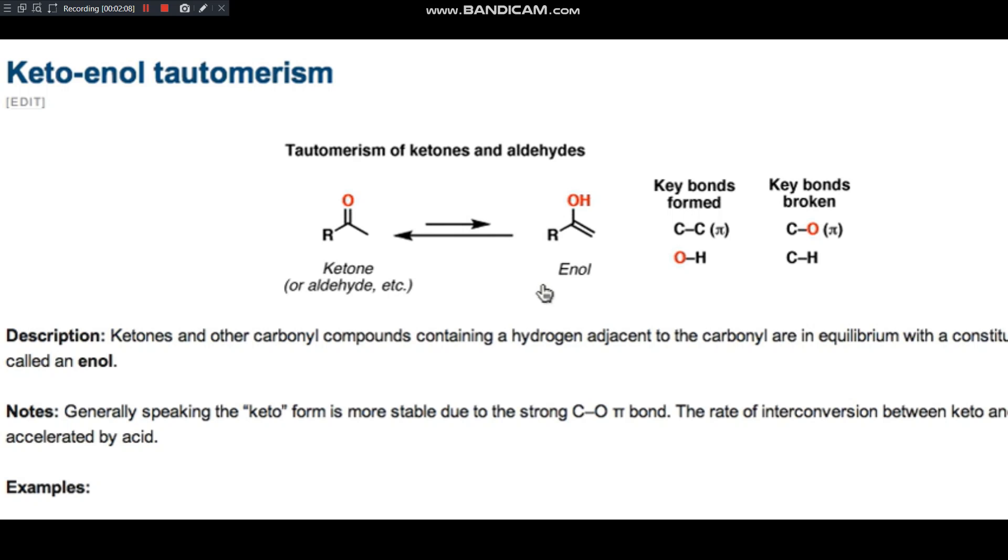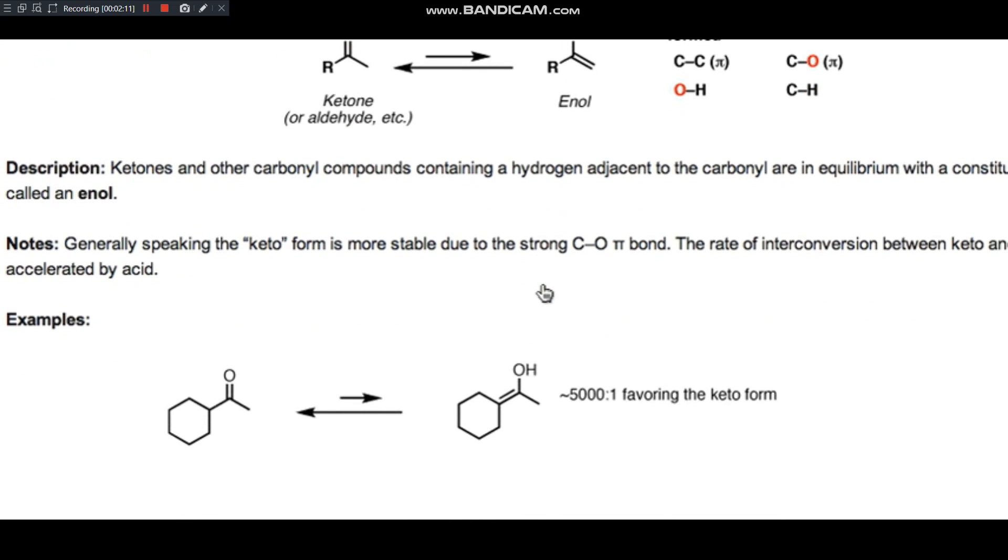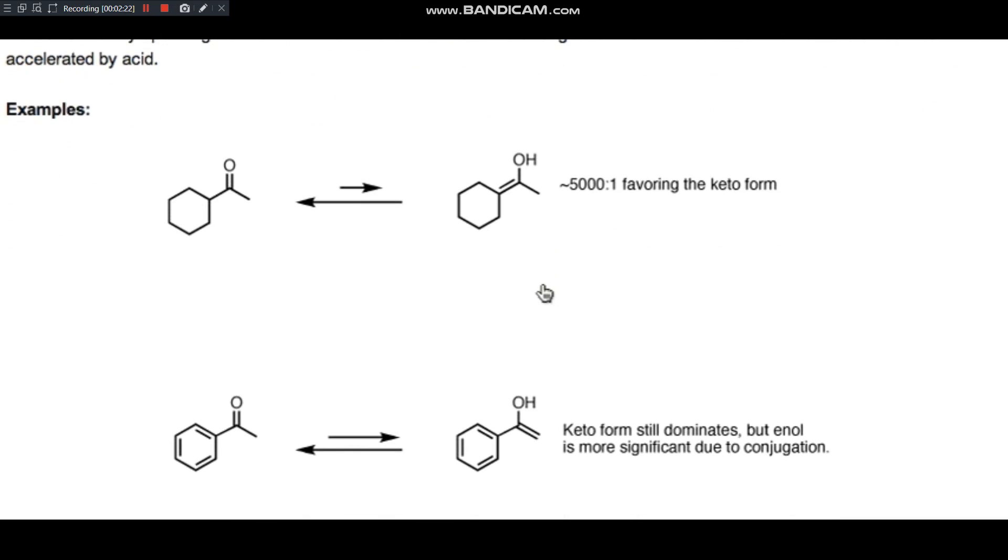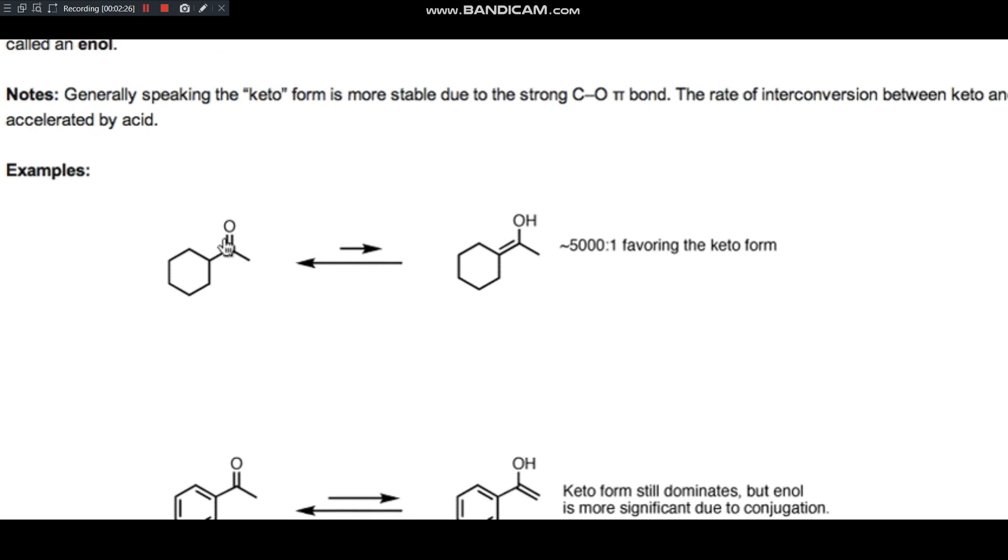So we'll just go through some more examples of how this works and just give you some specific examples so you can see some of the factors which favor the enol form or disfavor it, depending on the situation. Okay. In general, the keto form is more stable than the enol form. That's because you've got a pretty strong carbon-oxygen pi bond.